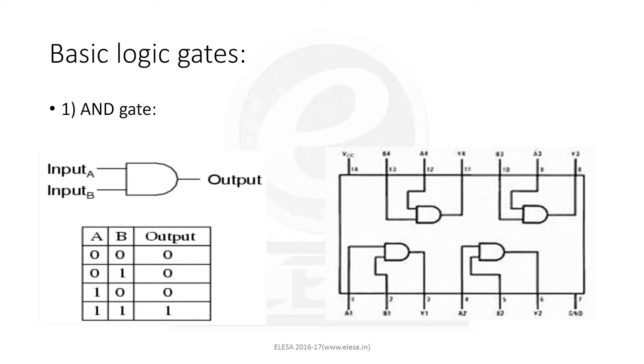It is a 14-pin IC with pin number 7 as ground and pin number 14 as VCC. And for input-output combination, there are the remaining pins. If we want a 3-input AND gate, then use 7411 IC. And for a 4-input AND gate, use 7421 IC.